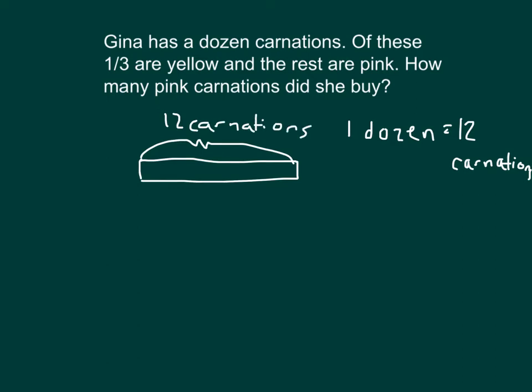It says one third are yellow and the rest are pink, meaning that we are going to separate this tape diagram into three parts. One third of the whole is yellow, and the other two thirds are pink.